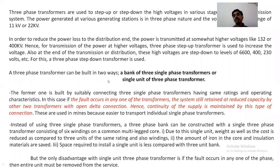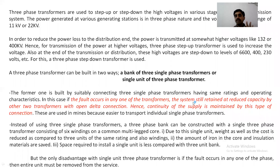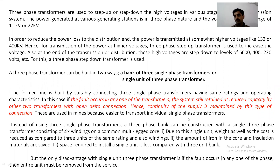The three-phase transformer can be built as a bank of three single-phase transformers or as a single three-phase transformer unit. Three single-phase transformers of the same rating and operating characteristics are taken to form a three-phase transformer. The main advantage is that whenever a fault occurs in any one transformer, the other two can supply the power — that is called open delta connection — so there is reliability and continuity of supply.